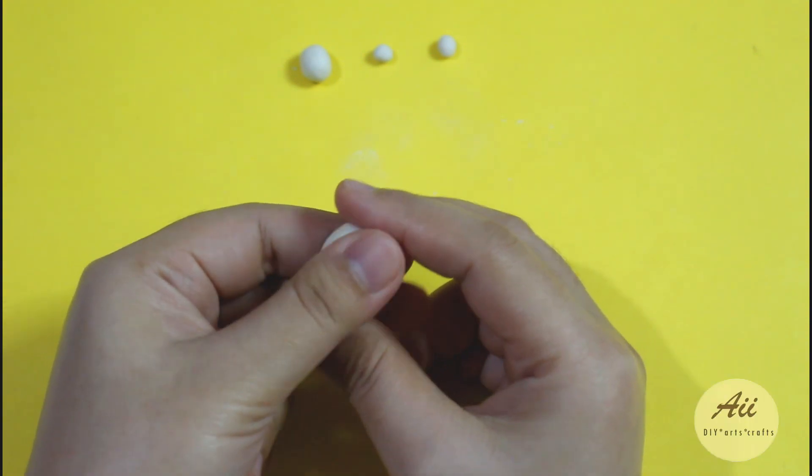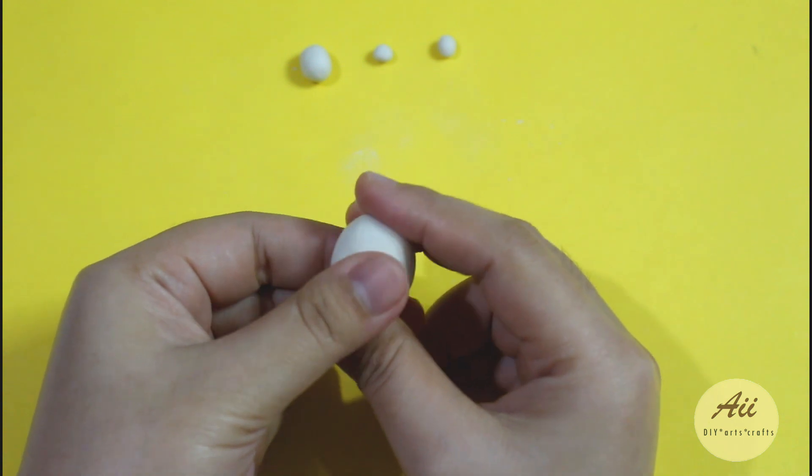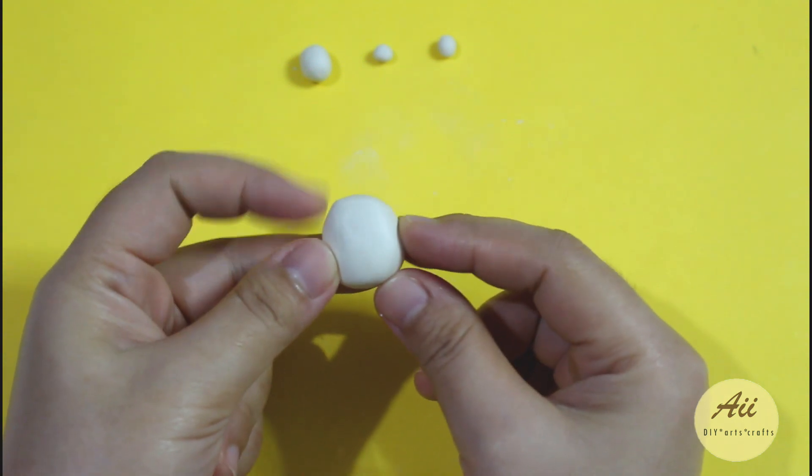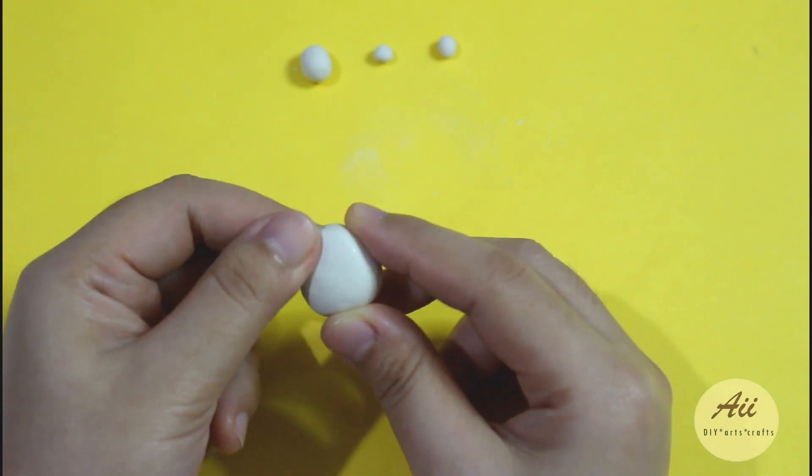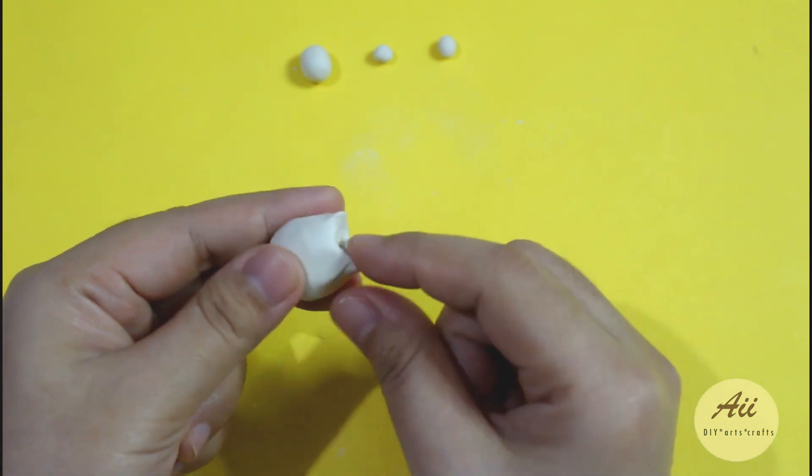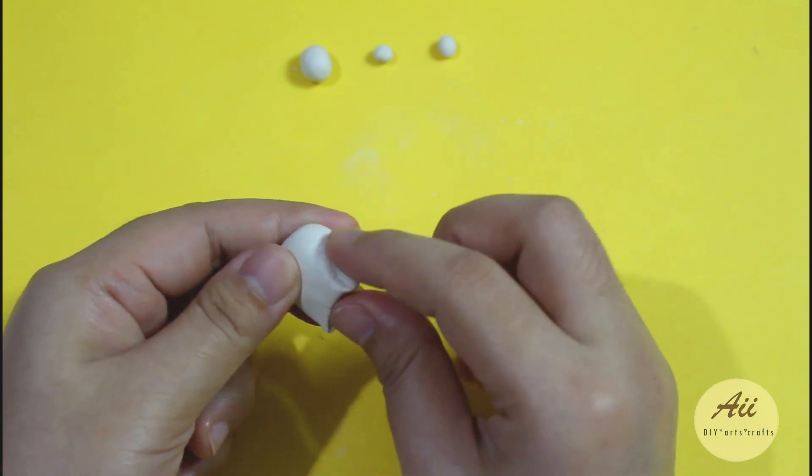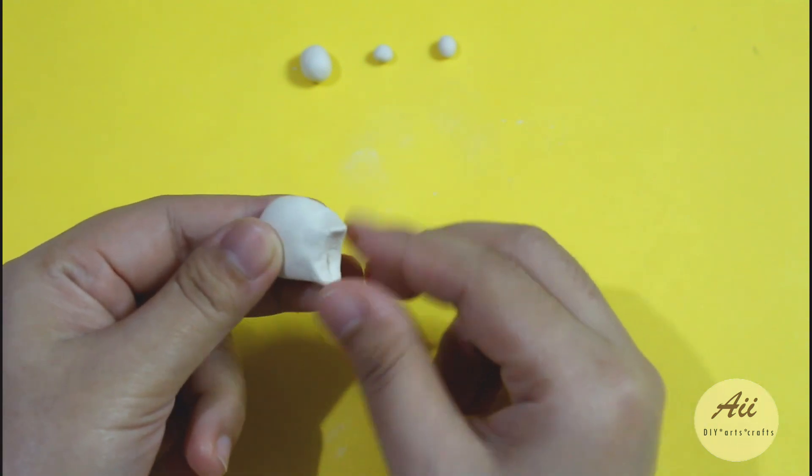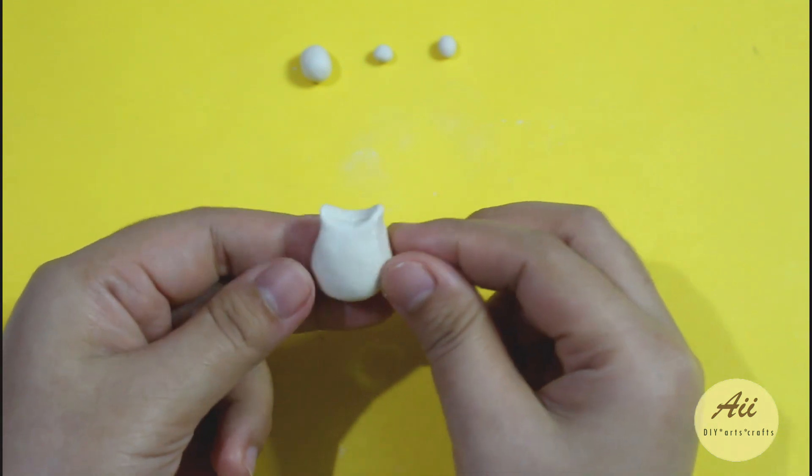Using your thumb, slightly flatten the ball so it's not that rounded until you get the shape you like. The wider part of the clay should be the bottom. And for the cat's head, again, pinch the sides to create two cat ears. Shape it carefully using a light hand until you are satisfied with the shape.